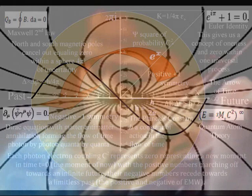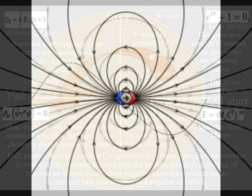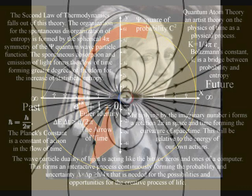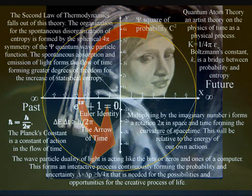The spontaneous absorption and emission of light forms photon-electron couplings, or dipole moments. This represents a process of symmetry forming and breaking, not just in space but also in time, with the future coming into existence with each new photon oscillation. Photon energy cascades down, forming greater degrees of freedom for the disorganization of entropy that we have in the second law of thermodynamics.